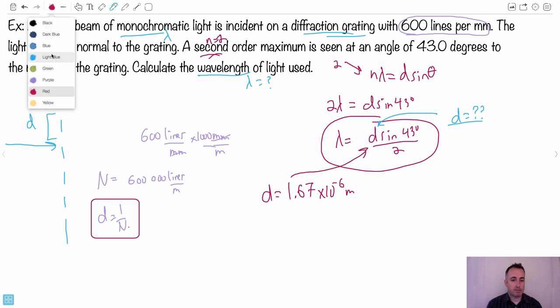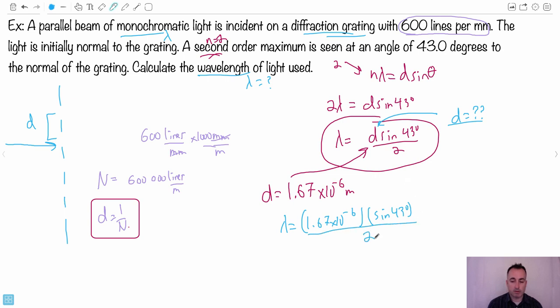So I plug that into here. So I end up with lambda equals D, which is 1.67 times 10 to the minus 6 meters times sine of 43. I may need to make sure that's in degree mode. So make sure my calculator is in degree mode and divide that by two. So I'm going to check my mode and make sure I'm in degrees, which I am. So I'll do sine 43. That times 1.67 times 10 to the minus 6. I get that answer and take that divided by two. I end up with a wavelength is 5.69 times 10 to the minus 7 meters.